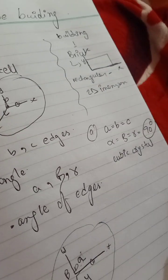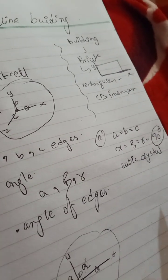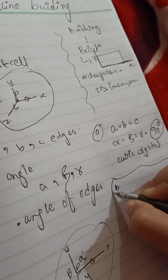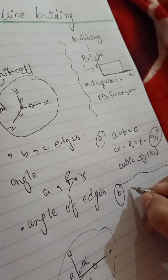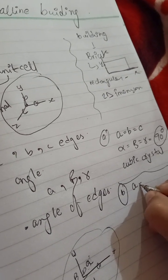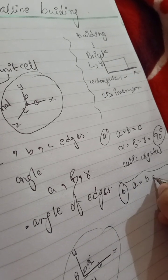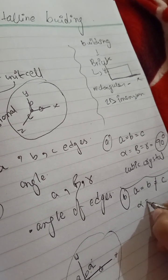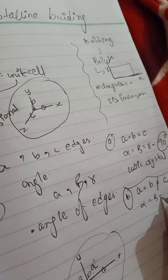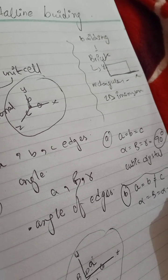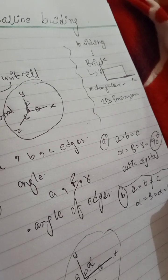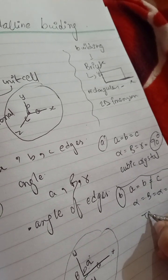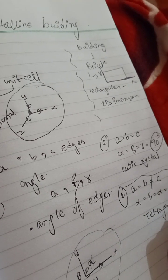The next one: when a = b ≠ c and alpha = beta = gamma = 90°, we are calling that a tetragonal structure.